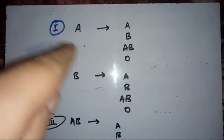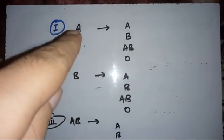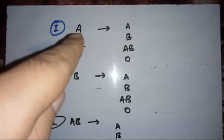Group A has A antigen but B antibodies, so A can transfuse to A. Can A transfuse to B? No. Because B has B antigen and no B antibodies, but it has antibodies against A. So the A antigen introduced would react with those anti-A antibodies, causing a transfusion reaction.